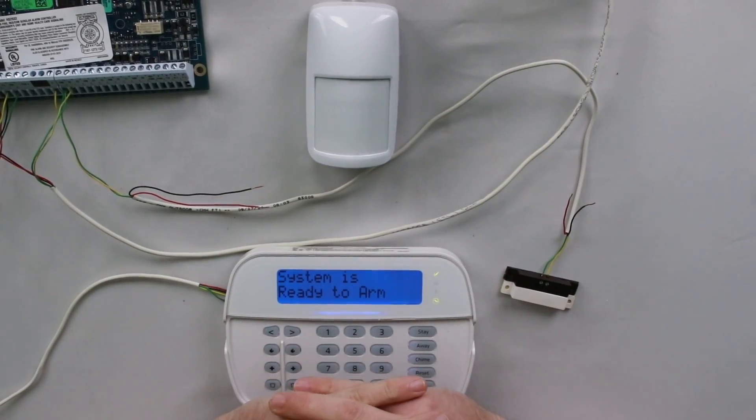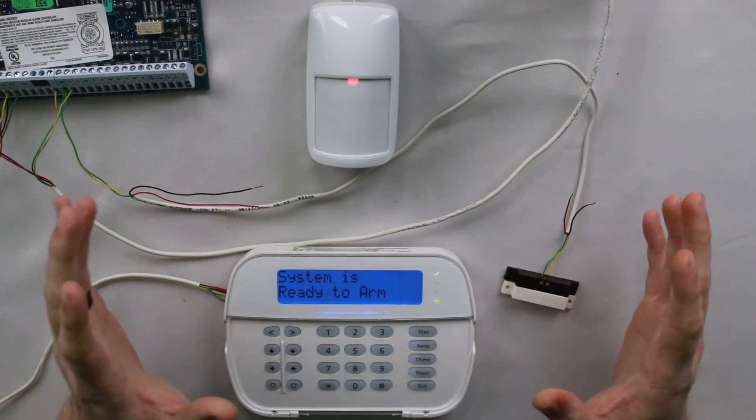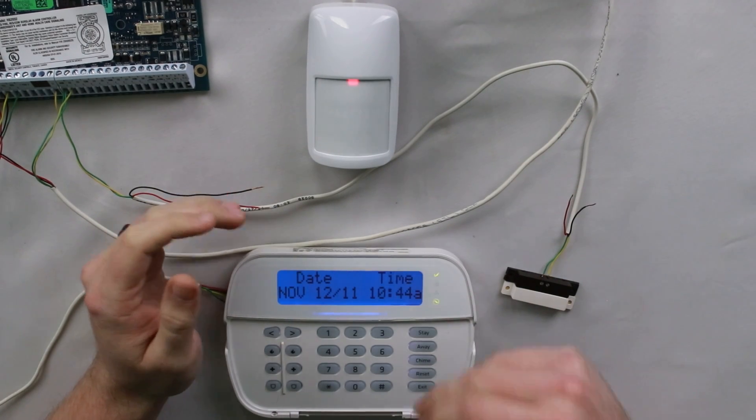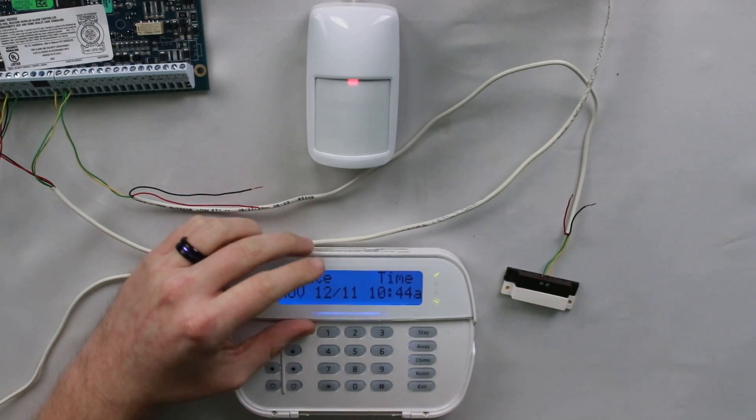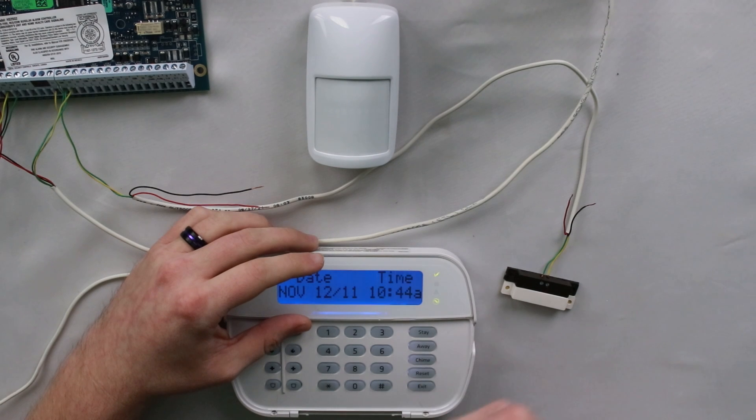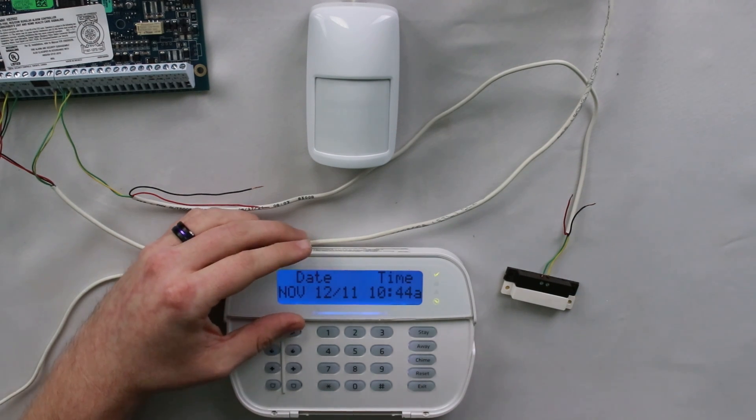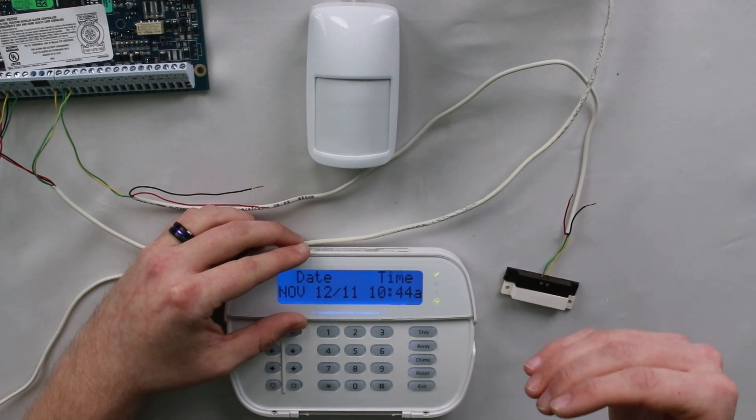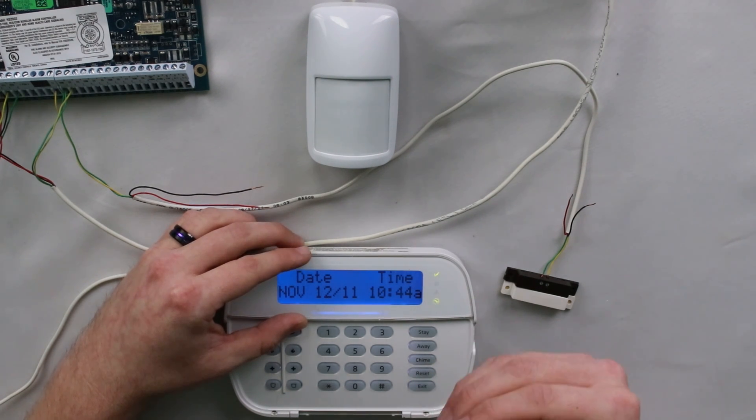So here in a second, I'm going to start going over the different scenarios for different types of systems and setups that you can have. But before we do that, I want to cover the different arming methods for arming from the keypad. Touchscreens offer a slightly different approach to this, but essentially the concept is still the same. Basically, you have three options. You can type in your code and that's going to start the exit delay countdown. Once you do that, it's going to tell the system to start watching that delay door to see if it opens and closes to see whether or not it needs to go into stay or away mode.